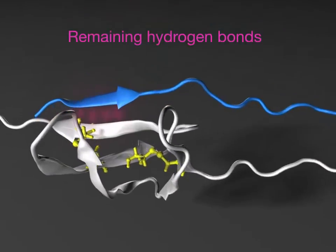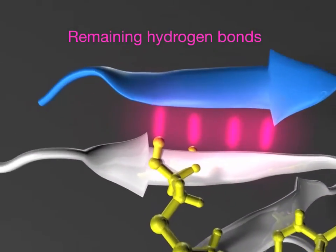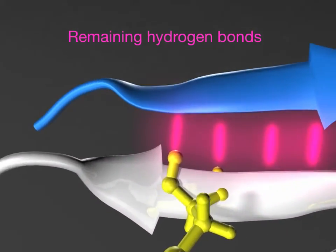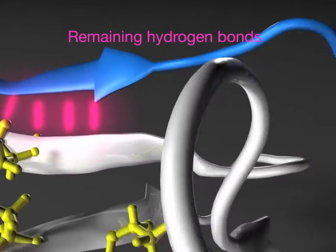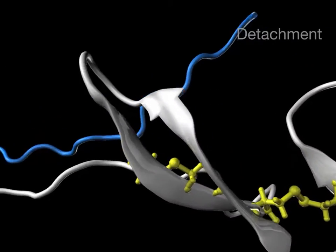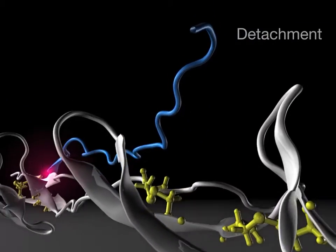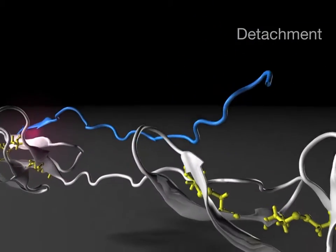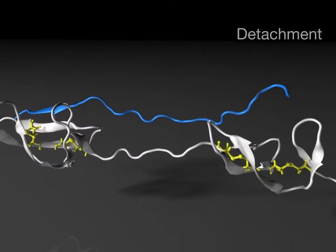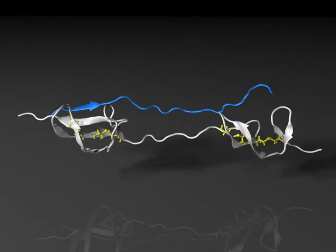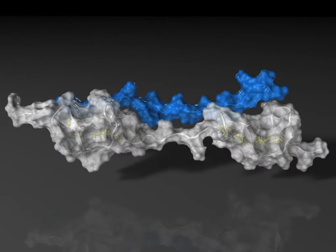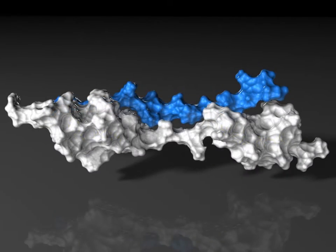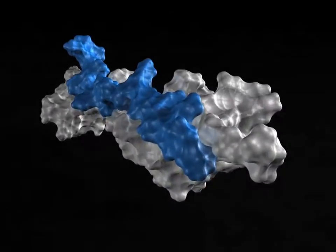While the adhesin stays bound to one fibronectin domain, it has detached from the other. The simulation therefore predicts a lower affinity of the adhesin to mechanically stretched fibronectin.